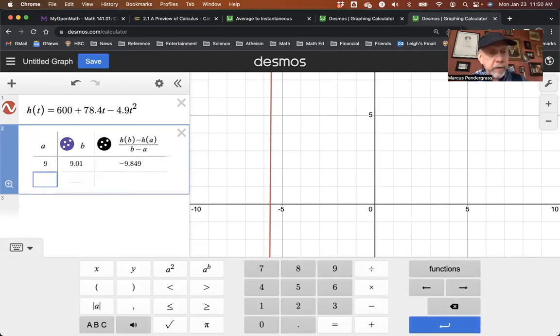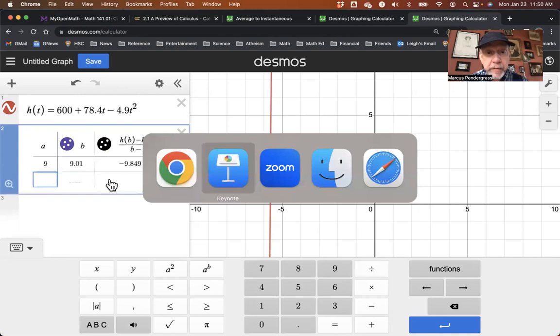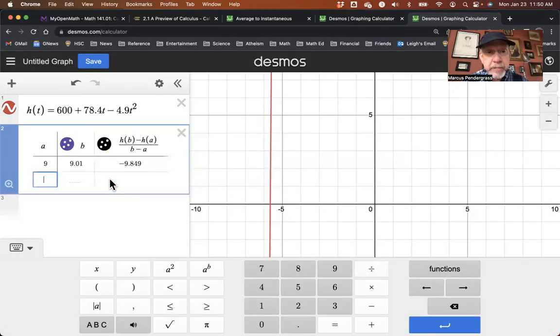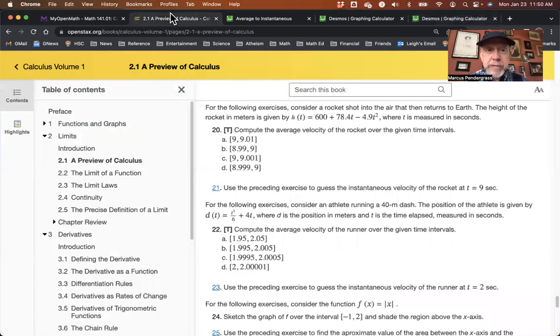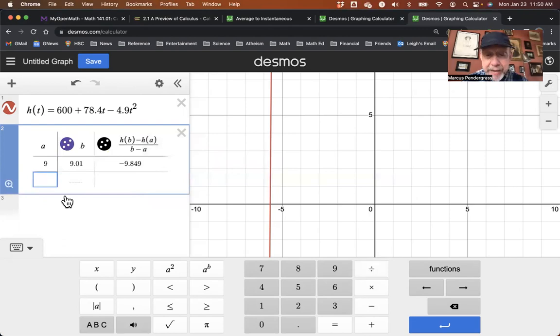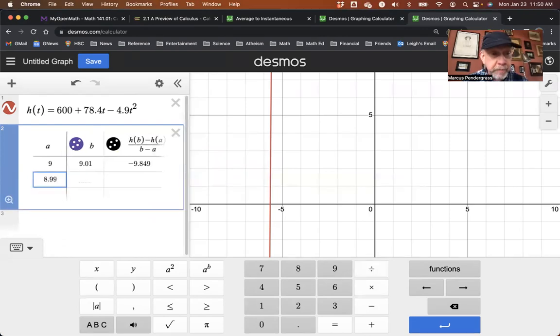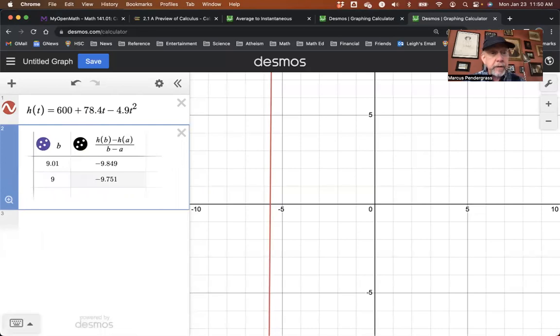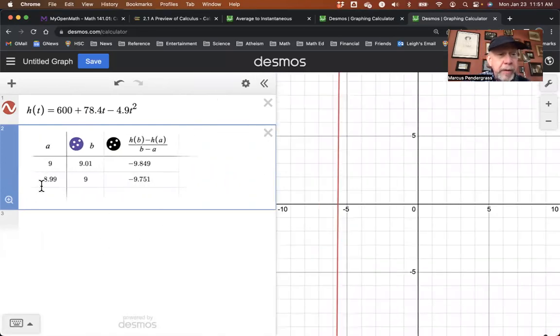And then you can do the others just as easily. The second interval is 8.99 to 9. So my A now would be 8.99. My B is 9. And there you get another. So the rate of change is slightly different here. From 8.99 to 9, it's minus 9.751. From 9 to 9.01, it's minus 9.849. Slightly different.